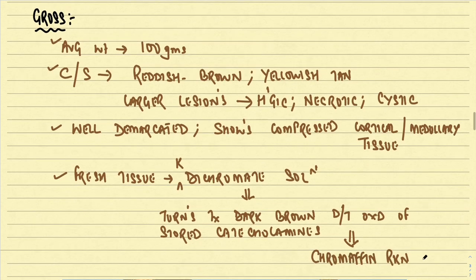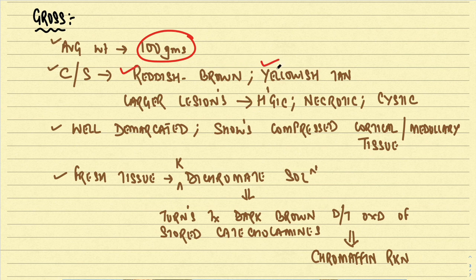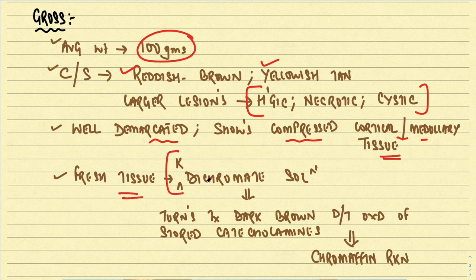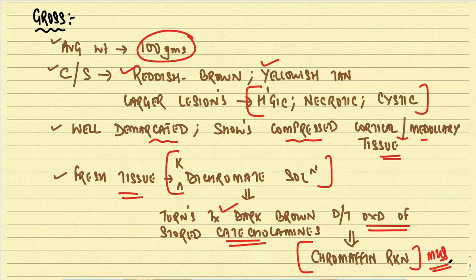Grossly, pheochromocytoma has a variable average weight — as small as 1 gram, while malignant tumors can reach up to 1 kg, with an average of around 100 grams. On cut section they are reddish-brown, sometimes yellow or tan. Larger lesions can show areas of hemorrhage, necrosis, and cystic changes. They are usually well circumscribed, with compressed cortical or medullary tissue at the periphery.